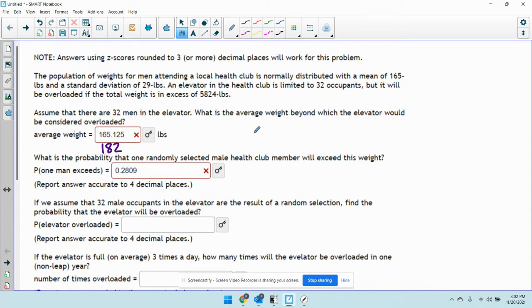Okay. So, now this says, what is the probability that one randomly selected male health club member will exceed this weight? So, what's the probability that a randomly selected man will have a weight greater than 182?